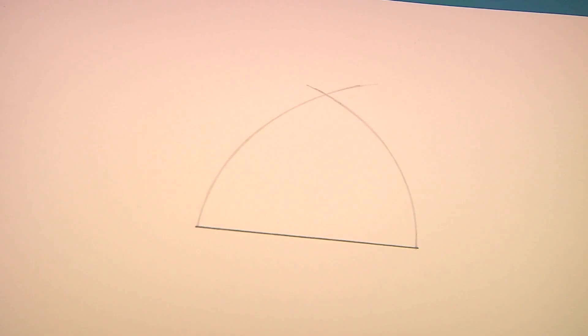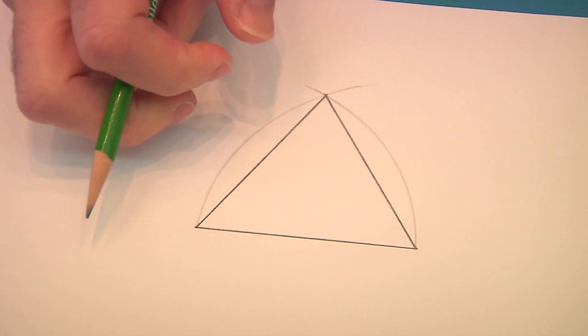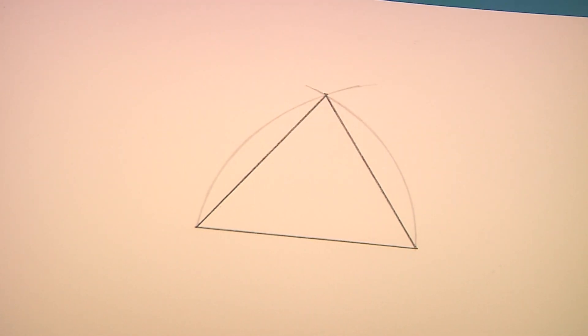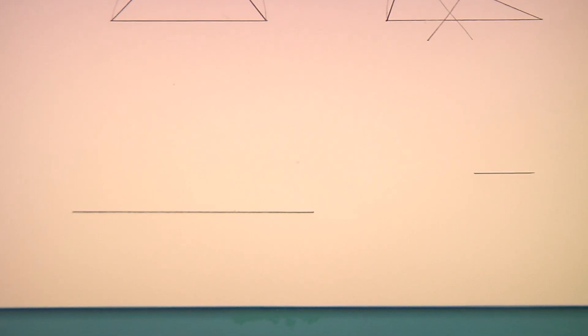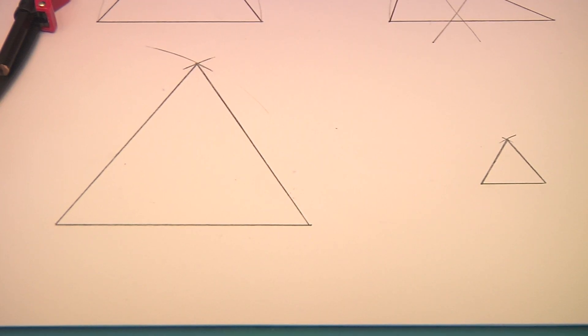It is only here, where the two arcs meet, that allow the two new lines to be the same length as the first line. And like I said earlier, this rule will hold true no matter what size of line you start with. Whether I start with a bigger or a smaller line, I can use the same technique to draw an equilateral triangle.